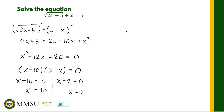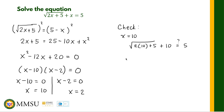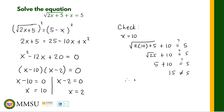Remember, we raised both sides to the power of 2, so this is just the solution set of the squared equation. Those solutions may not all be solutions of the original equation — that is why checking is a critical step. When x equals 10: square root of (2 times 10 + 5) plus 10 equals square root of 25 plus 10 equals 5 plus 10 equals 15, which is not equal to 5. Therefore, x equals 10 is not a solution of the original equation.